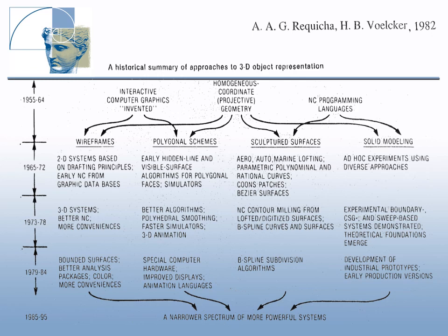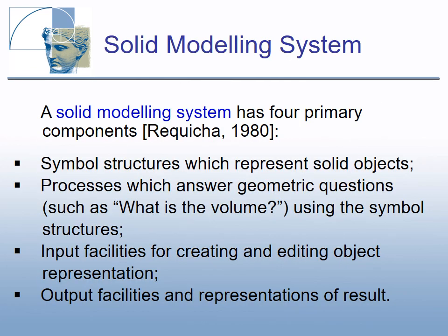To begin with solid models, we need to look in more detail at a typical solid modeling structure. Following the description of Rakesha, a solid modeling system has four primary components: symbol structures which represent solid objects, called solid object representations; processes which answer geometric questions such as what is the volume; input facilities for creating and editing object representations; and output facilities and representations of results.